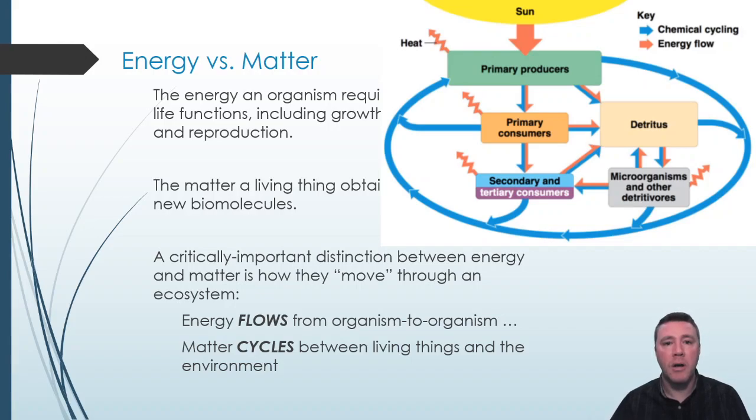An herbivore comes along, eats the plant, and now that phosphorus belongs to the herbivore. A carnivore eats the herbivore, and the phosphorus is transferred to it. Then the carnivore dies. Microorganisms decompose the carnivore, and that returns the phosphorus to the soil to be taken up by another plant. The cycle goes on indefinitely.